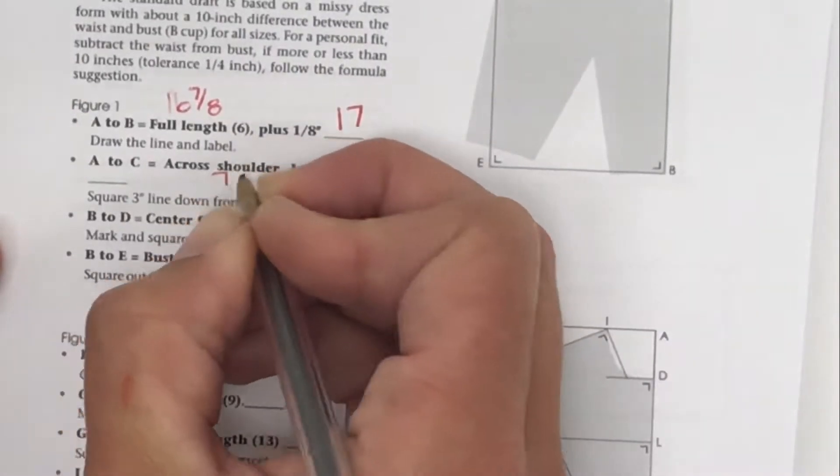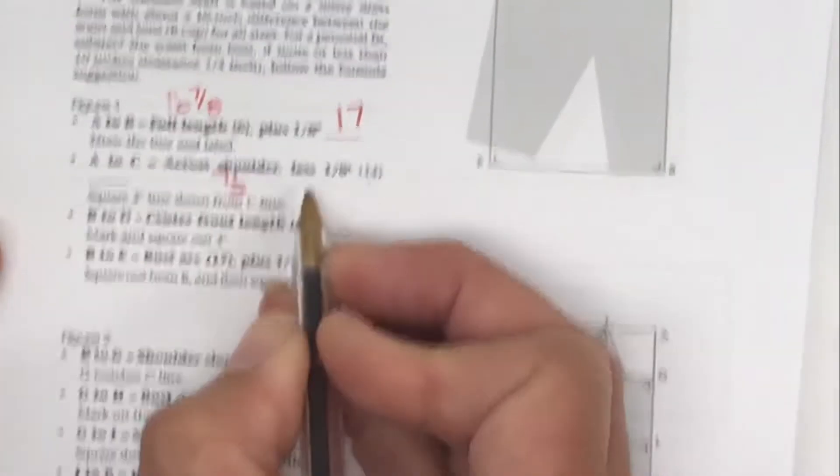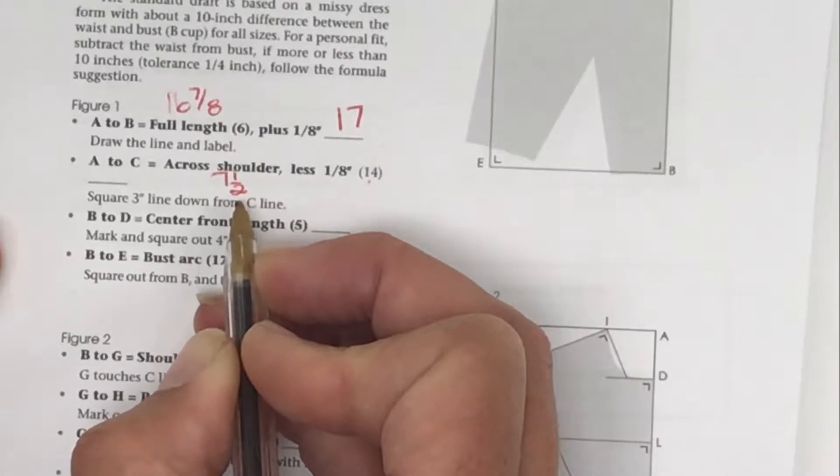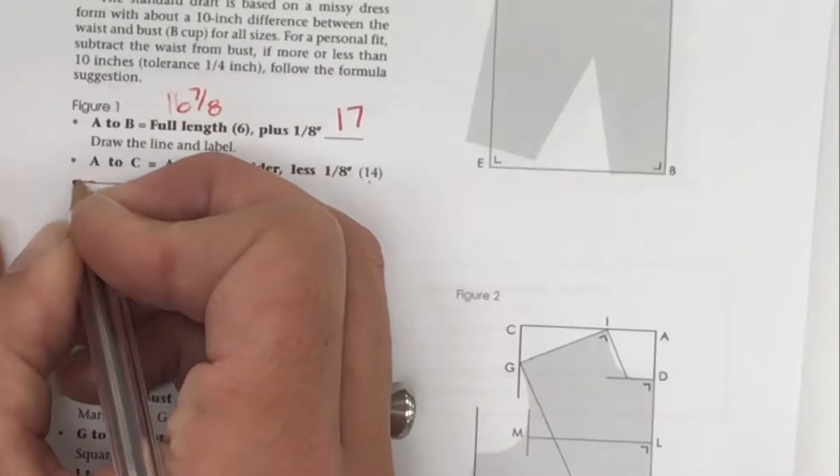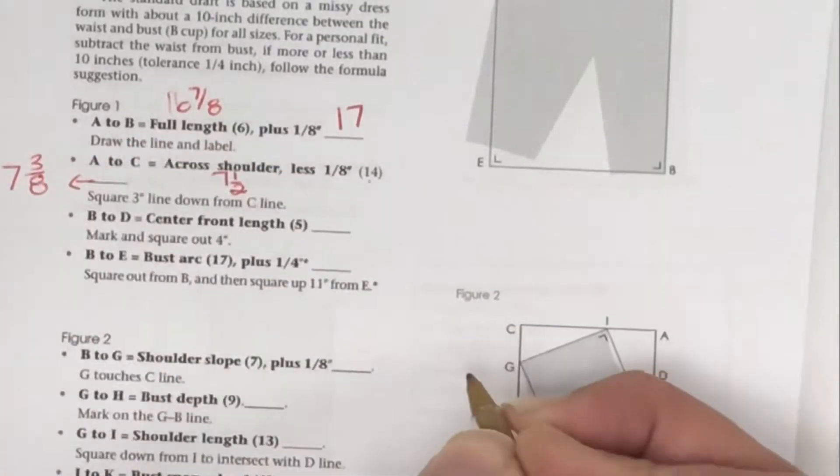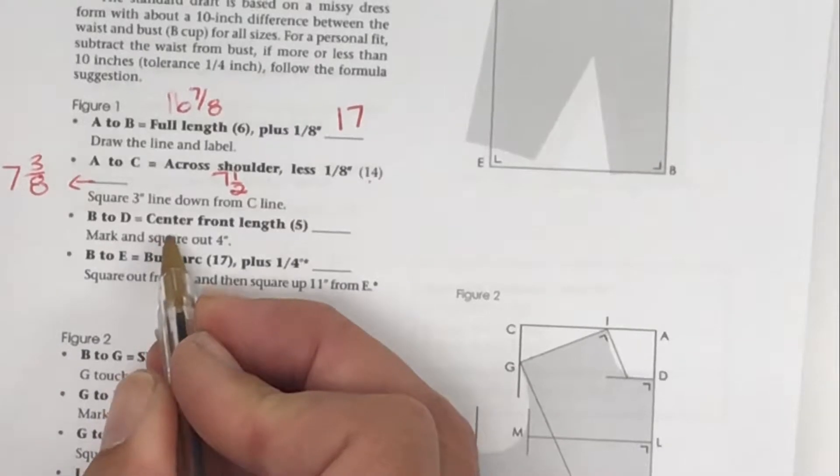Subtracting 1/8: well, 1/2 is the same as 4/8. 4/8 minus 1/8 equals 3/8, so my final answer is going to be 7 and 3/8.